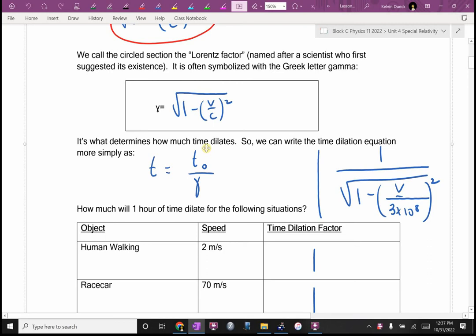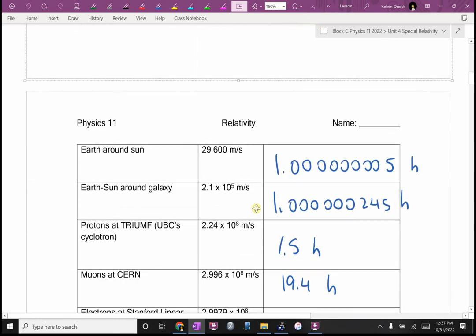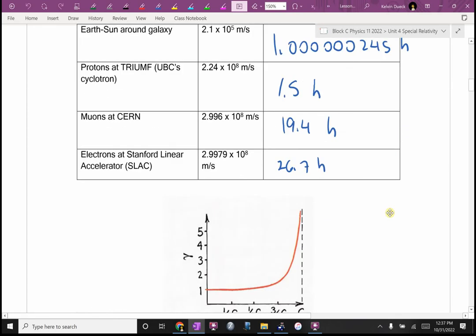And then we asked ourselves, why don't we notice relativity in our everyday lives? And we found even on a jet fighter going very fast, our calculator gave us a time dilation figure of one. So I couldn't even track the time dilation. When we started looking at the earth moving around the sun or the sun moving through the solar system, we got answers, but they were pretty negligible. It was only when we started to look at particle accelerators that we started to notice there was a significant difference.